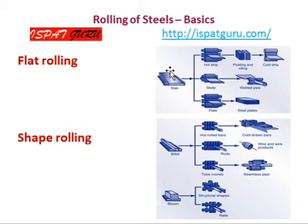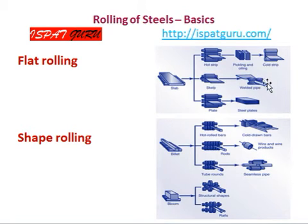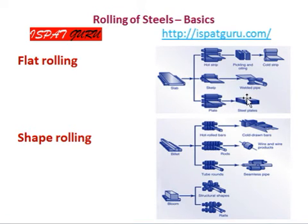One can see the flat rolls — a slab is being rolled. The slab is the initial starting material. It is rolled in a hot strip mill in the form of hot rolled coils, then pickled in acid — either sulfuric acid or hydrochloric acid — and then rolled in a cold rolling mill. The slab can also be rolled in the form of skelp, and skelp can be formed into pipe and then welded to produce an electric-welded pipe, or it can be rolled in a wide plate mill to produce plates, which are normally used for shipbuilding and other uses.